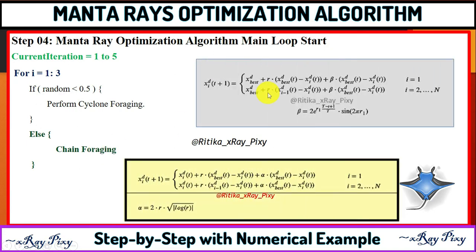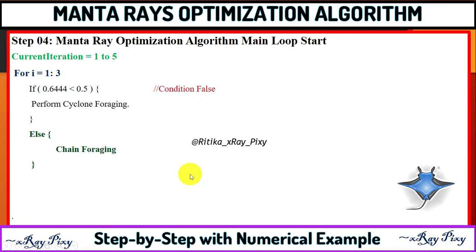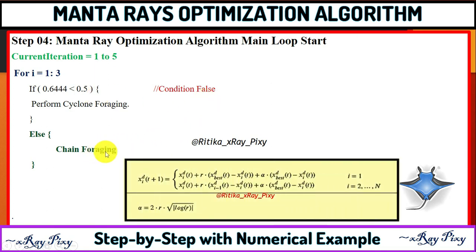Here is the mathematical model for cyclone foraging and this is the mathematical model for chain foraging. For our example random value, the condition is false, so we will perform chain foraging.